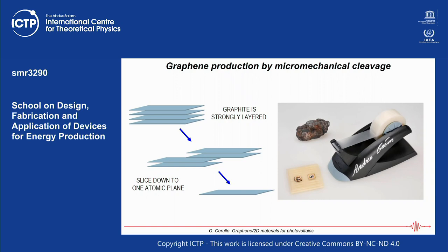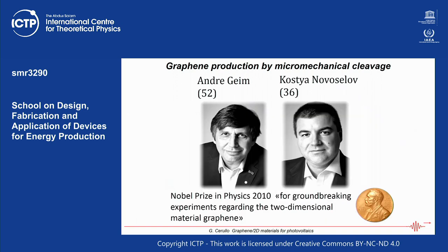This was one of the so-called 'Friday afternoon experiments' — when you've worked the whole week and try something unusual. They said: why don't we try to exfoliate graphite and see if we can get to a single atomic layer? And that's indeed how they succeeded in producing the first graphene. This also tells us that sometimes what is most important are ideas, not large funding — the funding required to make the first graphene was very limited.